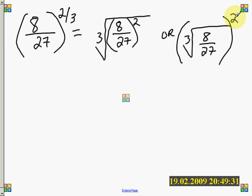So the squared can go either inside the radical as it does here or it can go outside the radical as it does here. They're both equivalent.